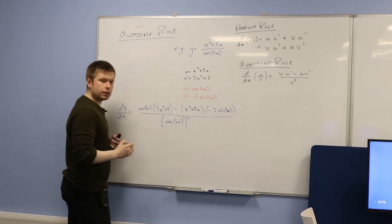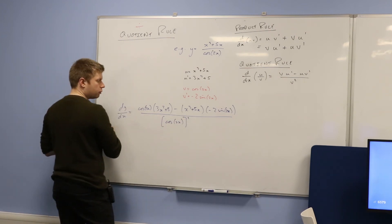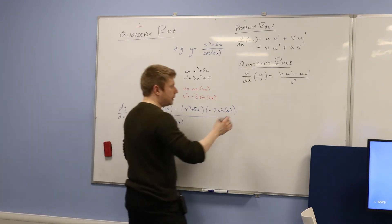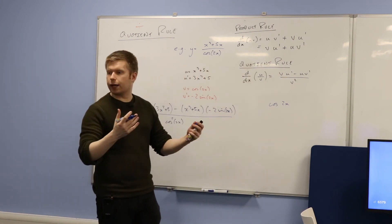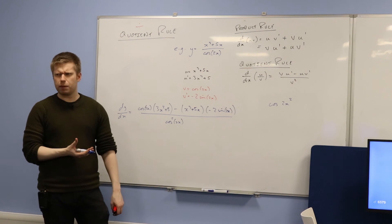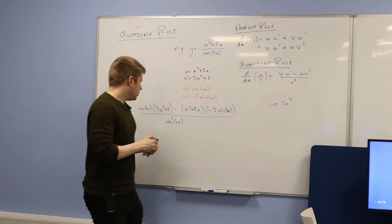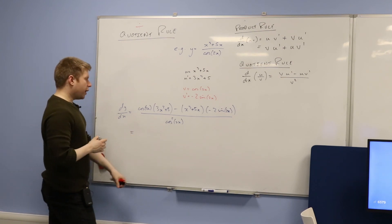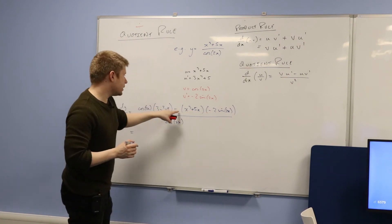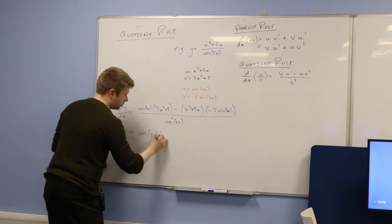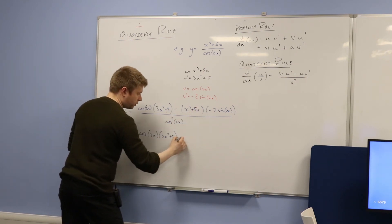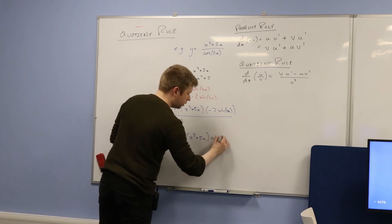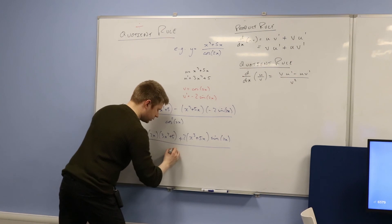Does anybody know how else we could write it? We could also write it with the squared in the middle — so cos squared of 2x. The reason being, some people tend to write cos 2x without the brackets, so if I write a squared without brackets, is it cos 2x being squared, or just the 2x being squared? So the reason we write the squared in the middle is to show it's the whole thing being squared. Then I just tidy: negative times negative becomes positive, so I get cos 2x times (3x squared plus 5), plus 2(x cubed plus 5x) sine of 2x, all divided by cos squared of 2x.